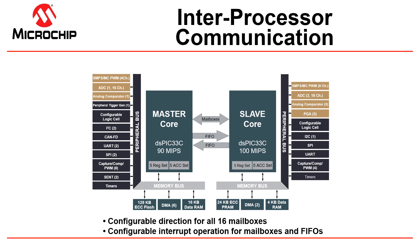On the other extreme, a safety-critical application can use the two cores to check each other frequently to detect any anomalies in the system. The flexibility enables applications to implement either an extreme level of cross-checking between the cores, or minimal communication using the processor communication interface.